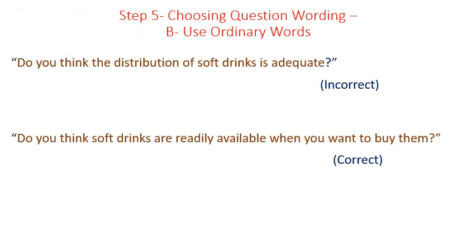Step number five — the final step — choosing question wording. B: use ordinary words. For example, 'Do you think the distribution of soft drinks is adequate?' uses incorrect wording. The correct wording is: 'Do you think soft drinks are readily available when you want to buy them?'